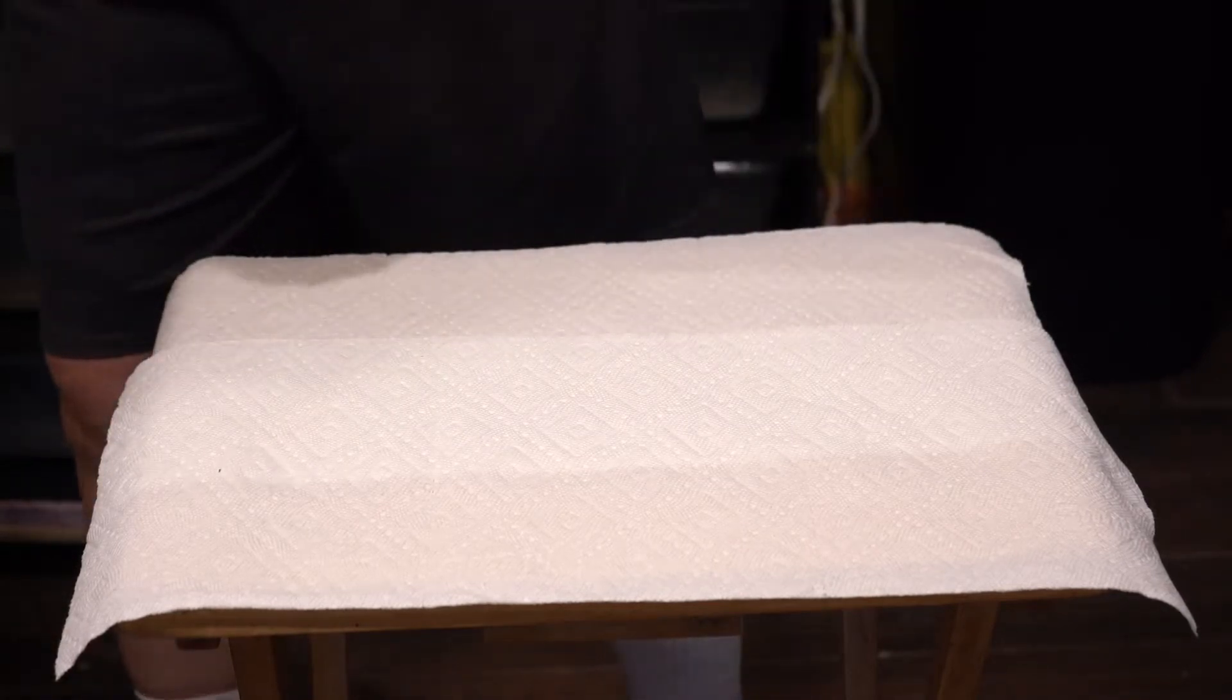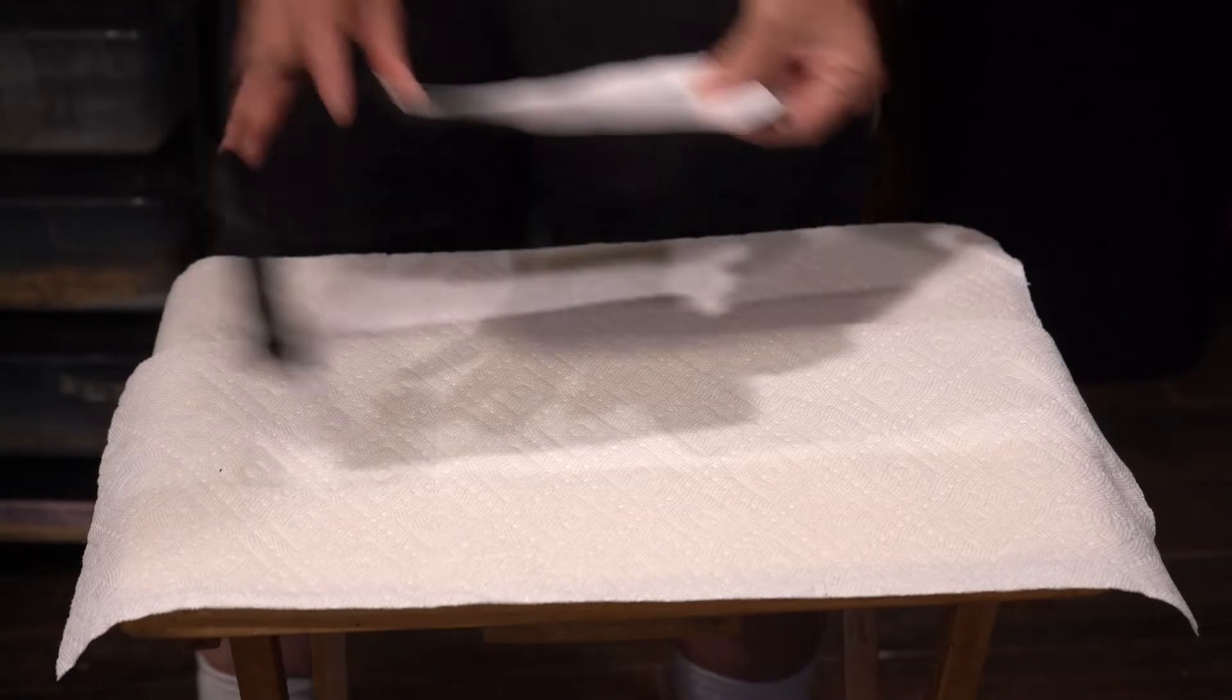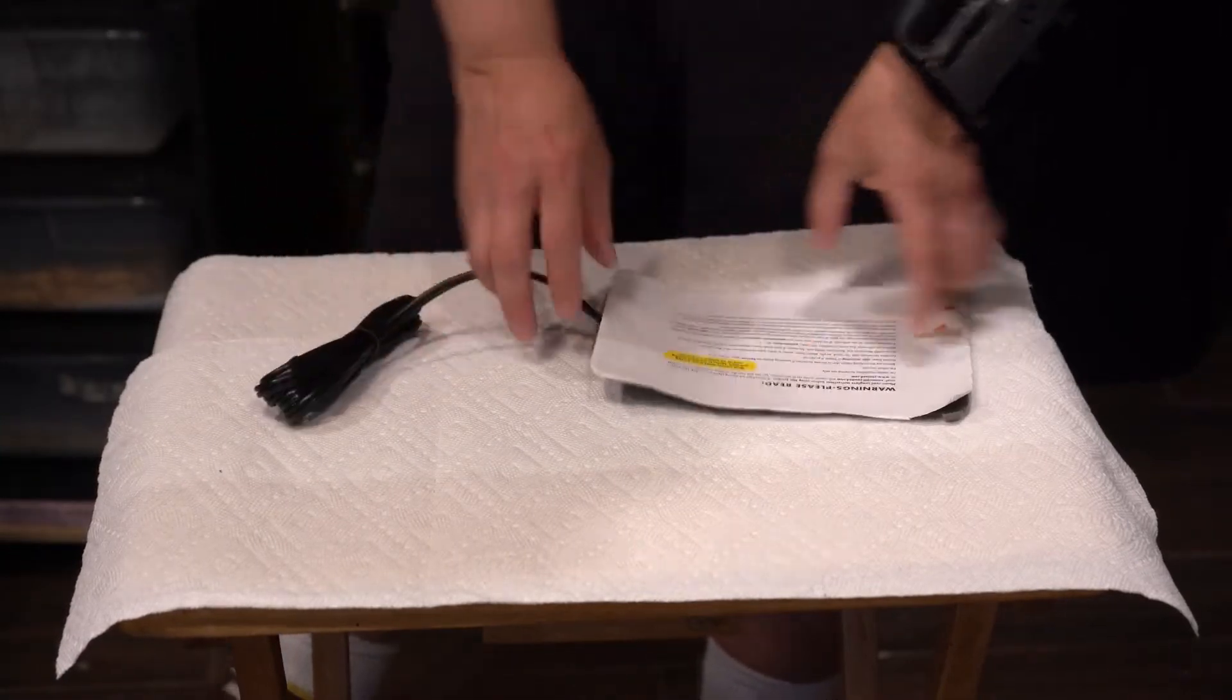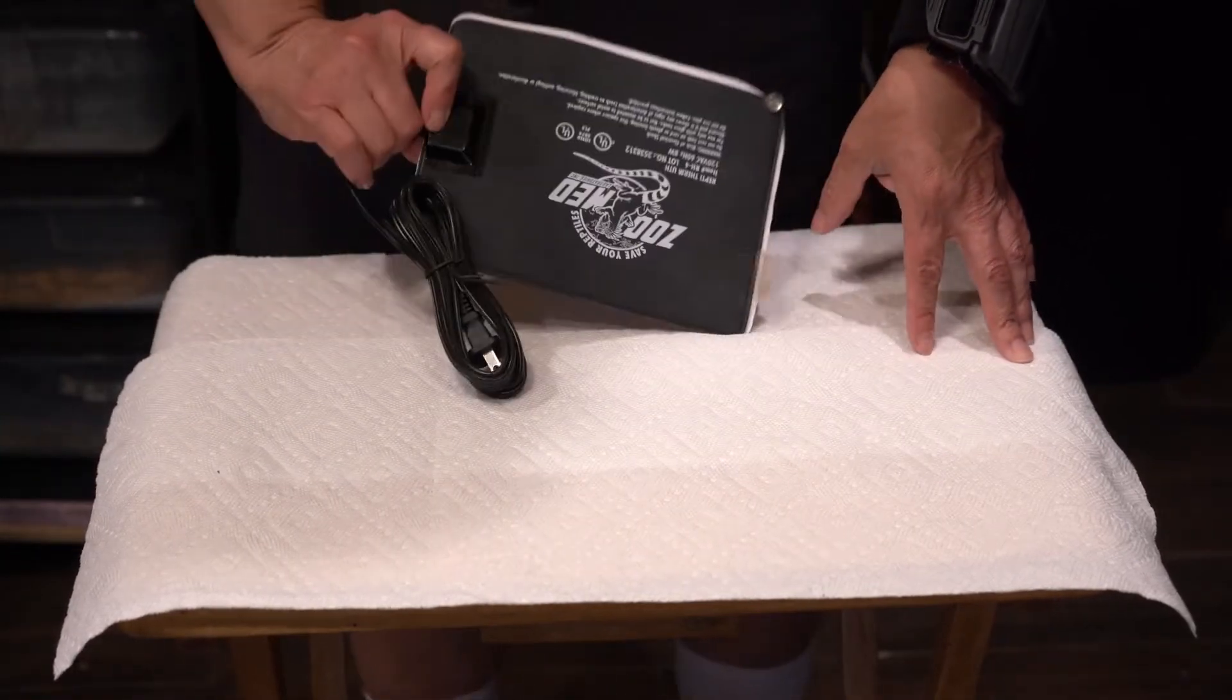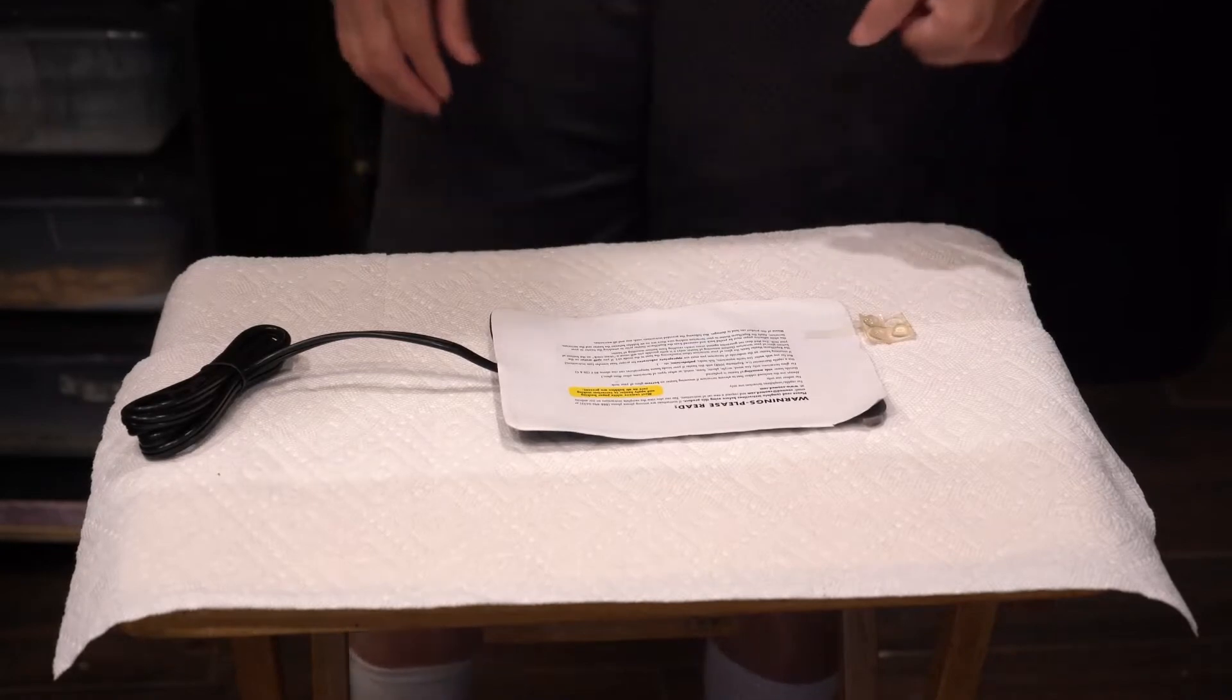The other thing you're going to need to do is take your heat mat out of the wrapper. Do not take the white backing off because we need to keep that on there. It's going to be sticky as soon as you take it off, so you want to be ready when you take it off.